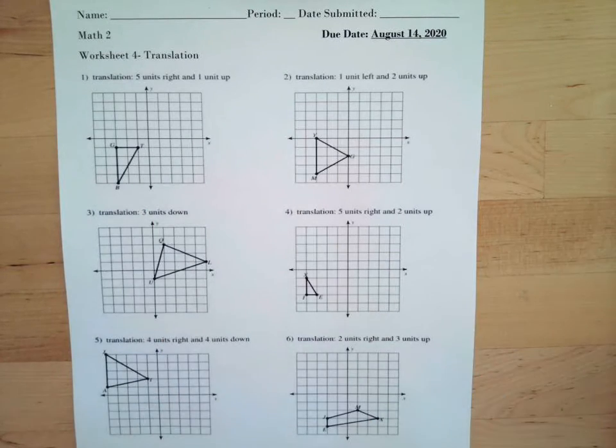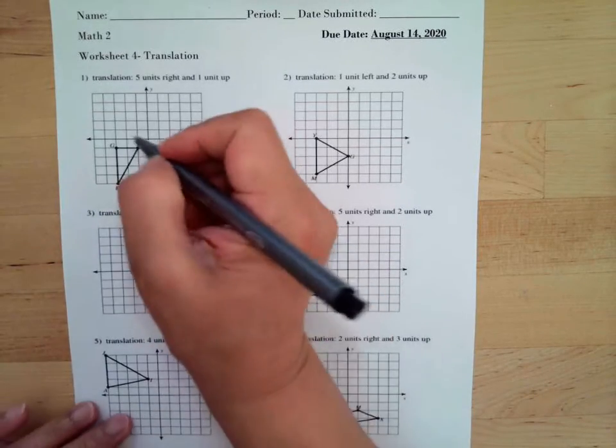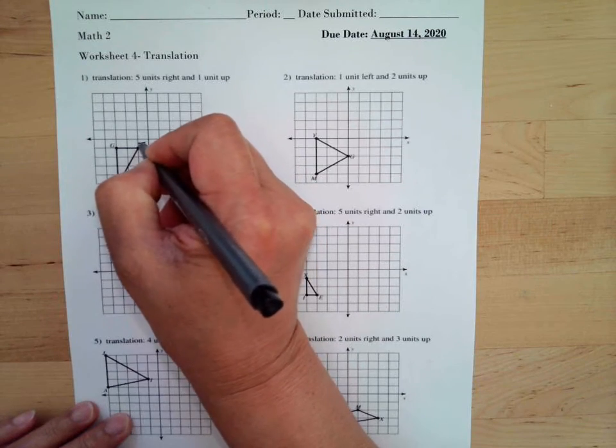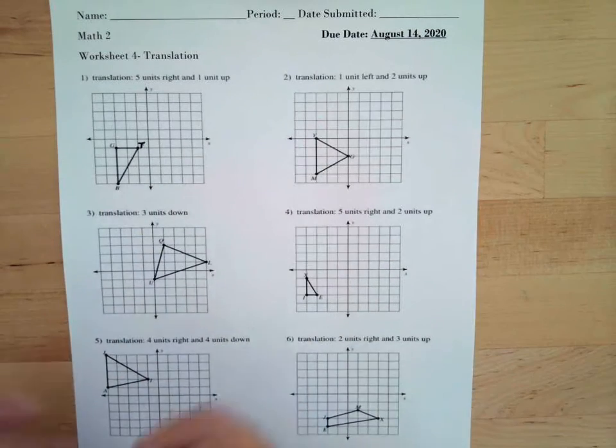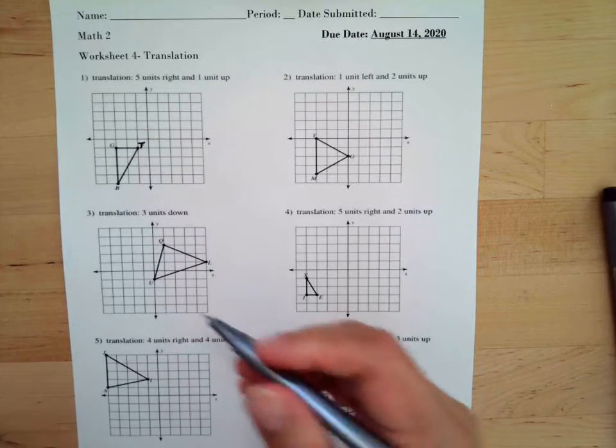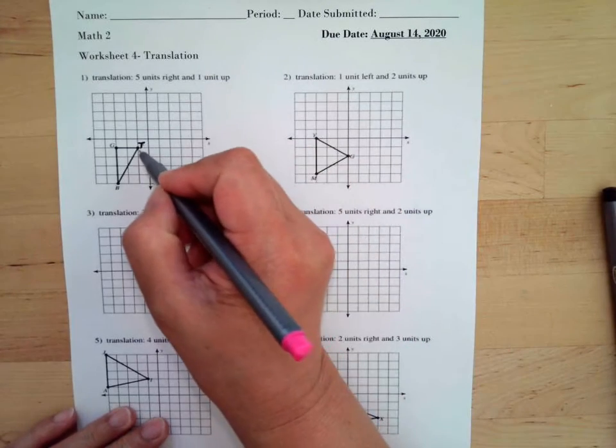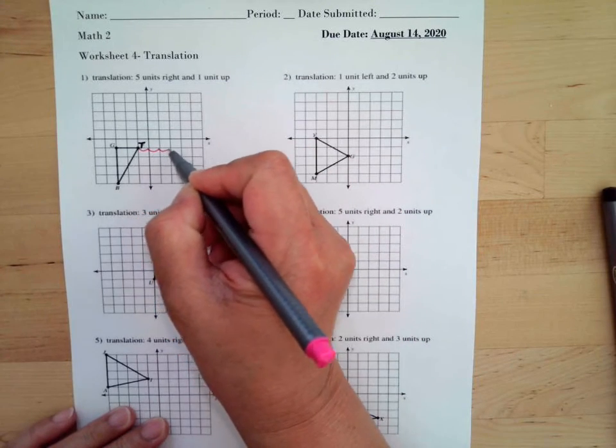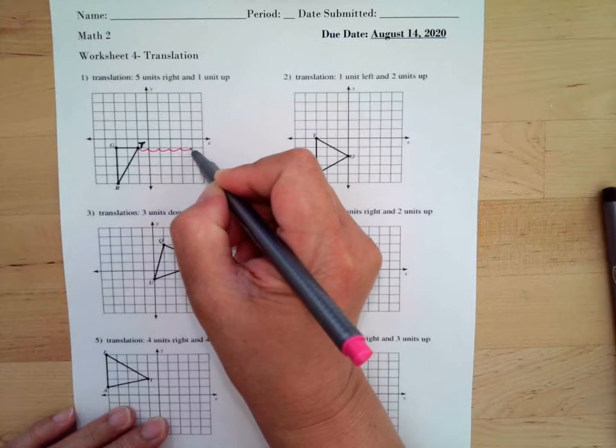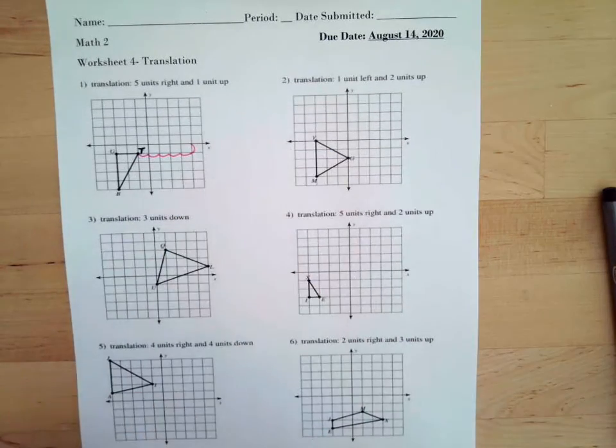I know it's kind of small, so this is letter T. We're moving letter T five units to the right and one unit up. So we have one, two, three, four, five, and one unit up, so meaning our...